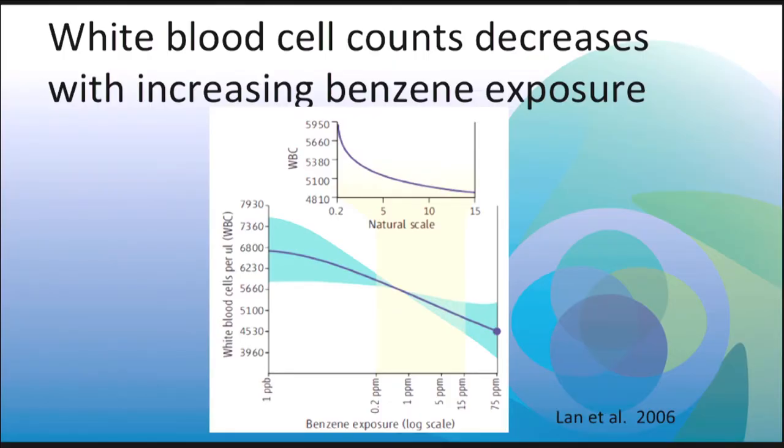In fact, this observation of responses below one part per million is not just restricted to gene expression. An earlier study which looked at white blood cell counts also observed decreasing white blood cells with increasing benzene exposure, particularly at the lower doses below one part per million. We really need a larger study where people are exposed at a lower dose range, where we can attempt to validate these findings.